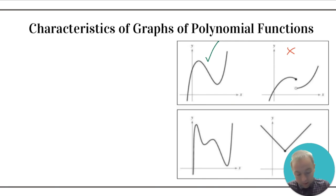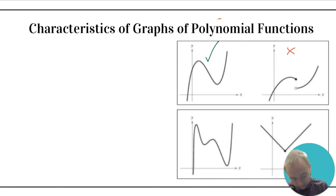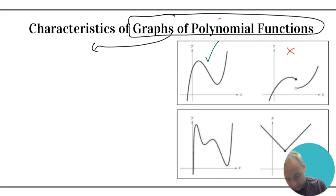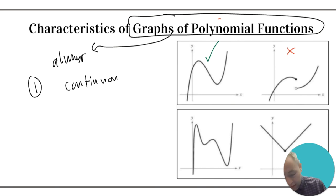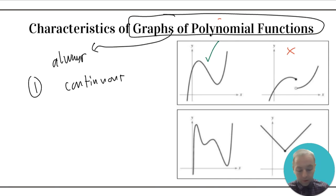The first graph is all connected, versus the other one became disconnected at some point. One thing that is always going to be true about polynomial functions is that their graphs are always, number one, continuous. You can put your pencil on the paper and move it around, but your pencil will never leave the paper — it has to be all connected. If it becomes discontinuous, like there's a hole, asymptote, or a jump in the graph, that's not going to be the graph of a polynomial function.